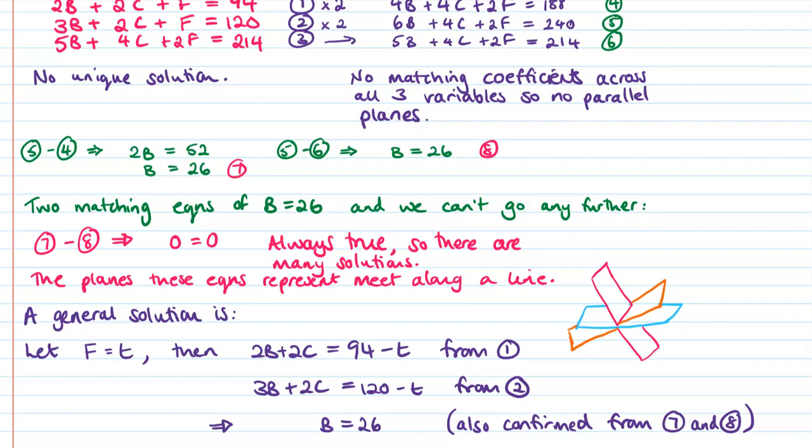Now, you might have just noticed I deleted the word infinitely because whilst talking about it, I realized there aren't actually infinitely many solutions on this one because we've been limited to half portions. And we know that there's going to be a limit of the range of values that these things can take. So whilst normally if planes meet along a line, there are infinitely many solutions, if we then put restrictions on them, it's not infinite anymore. But there are many solutions, multiple solutions to this problem.